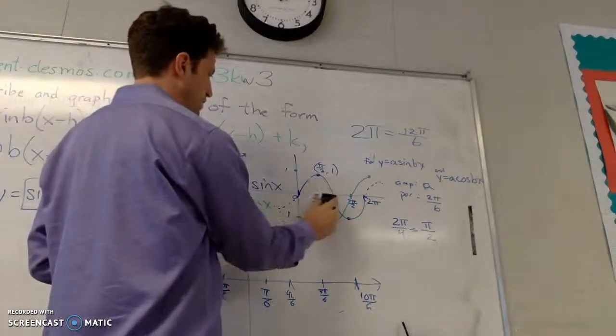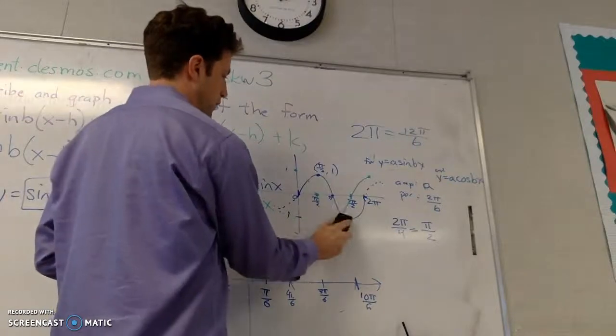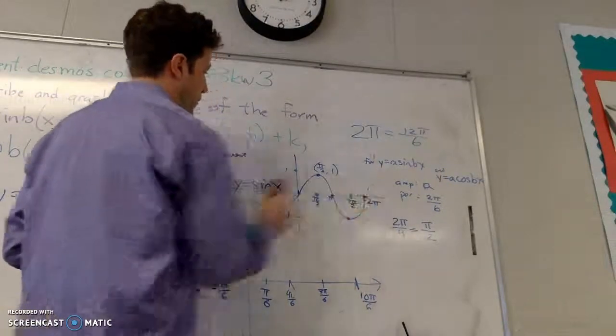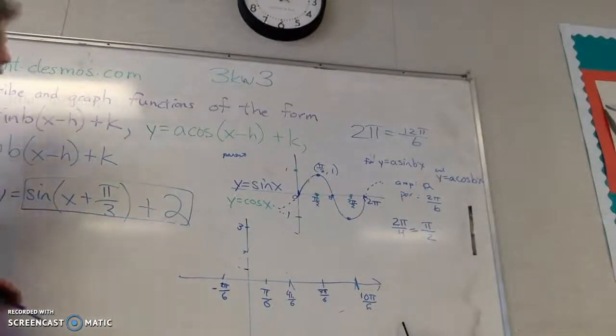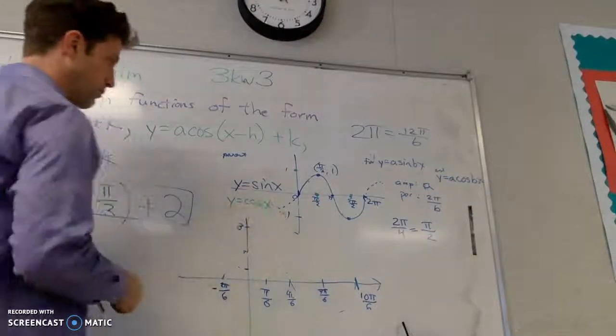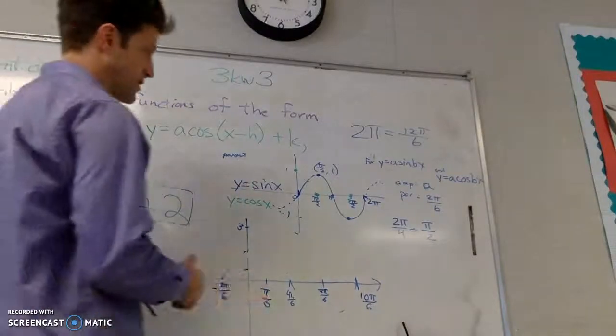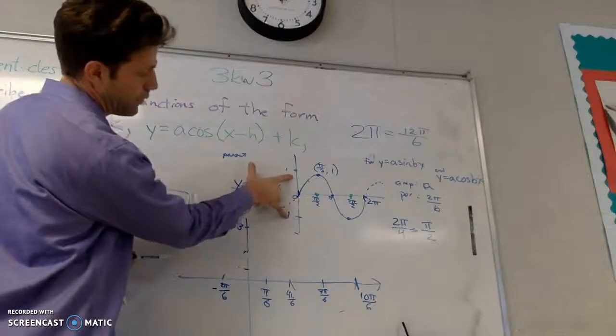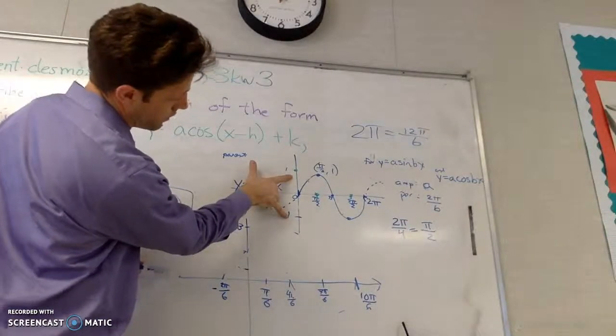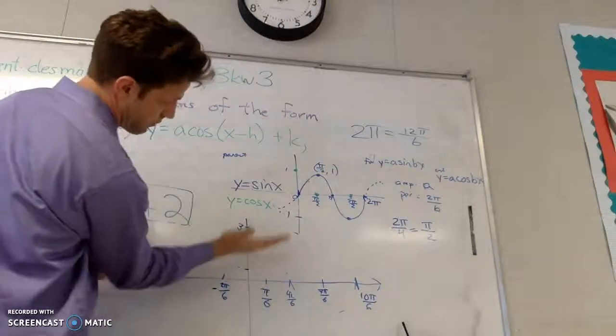And we've used h and k before. And what they do, well, k is the simpler one. So, k just moves the whole graph up two. So, my graph is going to be moved up two. That's simple, that's easy. And by moving it up two, instead of it going from negative one to one, move it up one, two, and it's going to go from one to three.